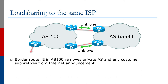Let's have a look at the diagram. The link from router A to C is one link, the one from B to D is the second link. Again, we're using AS100 for the upstream provider and AS65534, the private AS, for the customer end site. Router E is removing the private AS and any customer sub-prefixes from what AS100 is announcing to the internet.